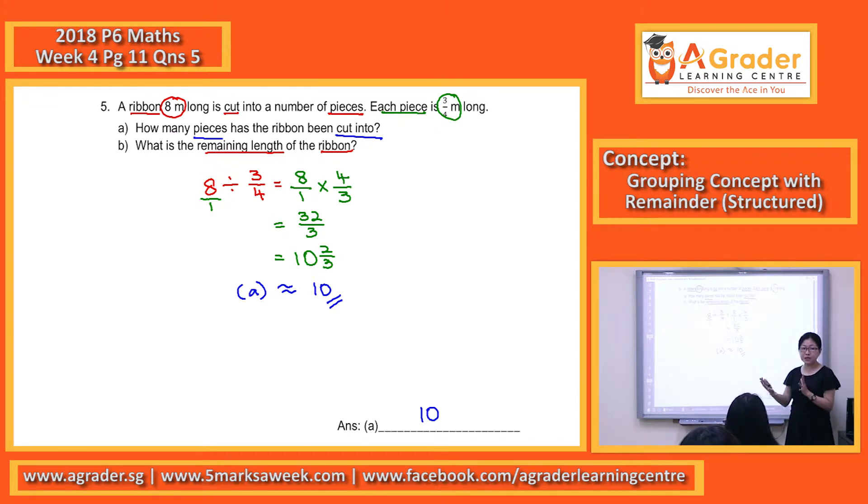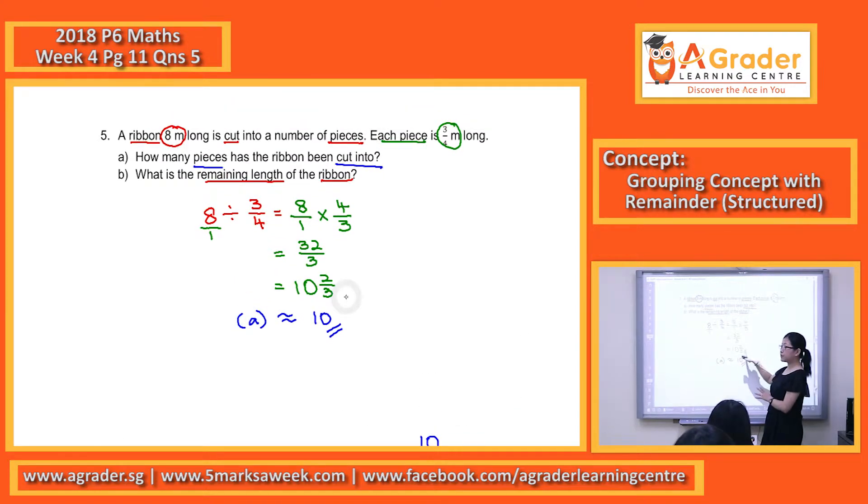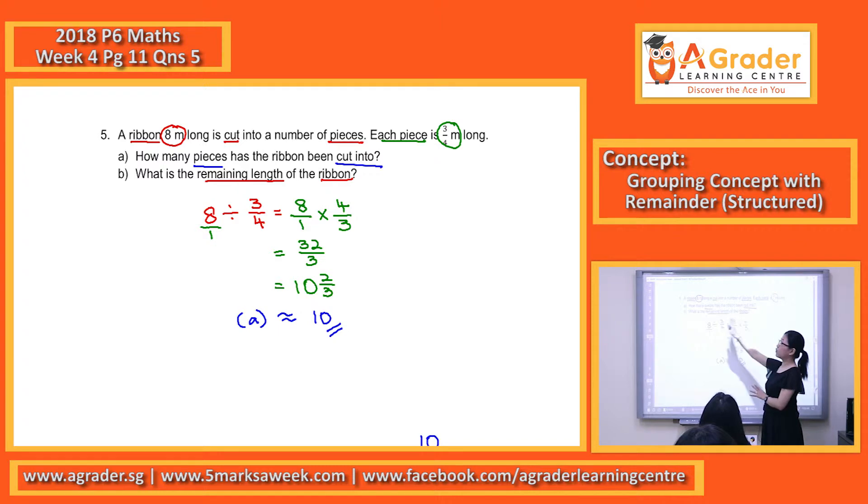So you can't just simply leave 2 out of 3 as the answer. As the previous questions, I proved it to you, 2 out of 3 definitely you cannot happily leave it as the remainder. This 2 out of 3 represents 2 out of 3 of whatever you cut. But for this question, I will still show by the 2 methods.